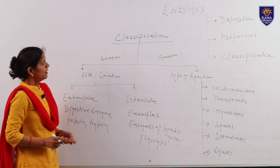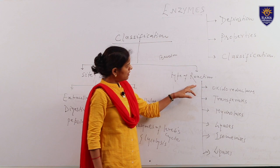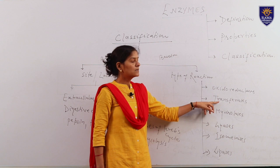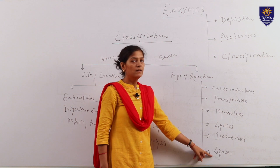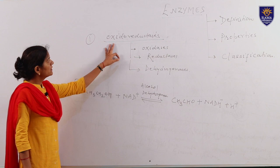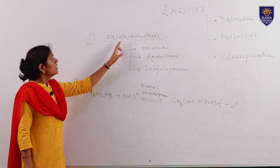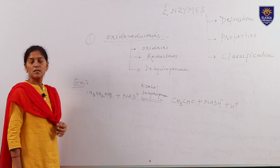Depending upon the type of reaction, enzymes are classified into six categories: oxidoreductases, transferases, hydrolases, lyases, isomerases, and ligases. Oxidoreductases — oxido means oxidation and reductase means reduction. These are the enzymes which catalyze oxidation as well as reduction reactions, and combinedly they are called redox reactions.